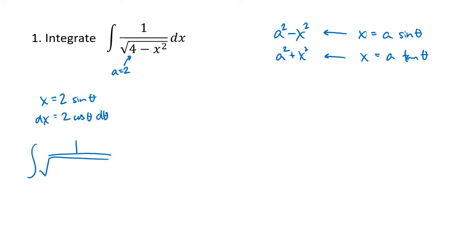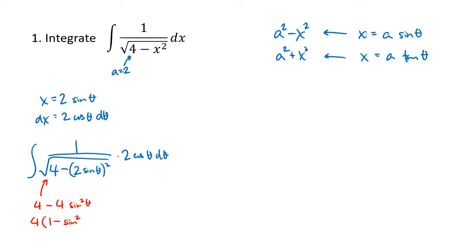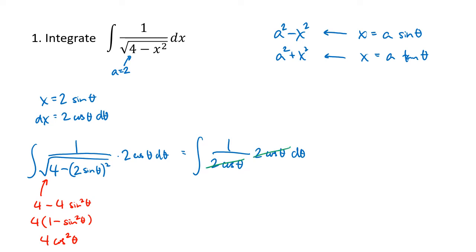On the bottom of that fraction, we have 4 minus the quantity 2 sine theta all squared, multiplied by 2 cosine theta d theta. Inside that square root, we get 4 minus 4 sine squared of theta. Factoring out the 4 gives us 1 minus sine squared of theta, which by the Pythagorean trigonometric identity is 4 cosine squared of theta. Taking the square root gives 2 cosine theta. The 2 cosine theta terms divide out, so we just have the integral of d theta, which is theta plus c.